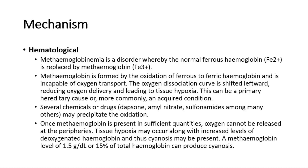For hematological causes, methemoglobinemia is a disorder whereby the normal ferrous hemoglobin is replaced by methemoglobin. Methemoglobin is formed by the oxidation of ferrous to ferric hemoglobin and is incapable of oxygen transport. The oxygen dissociation curve is shifted leftward, reducing oxygen delivery and leading to tissue hypoxia. This can be a primary hereditary cause, or more commonly, an acquired condition. Several chemicals or drugs may precipitate the oxidation. Once methemoglobin is present in sufficient quantities, oxygen cannot be released at the peripheries. Tissue hypoxia may occur along with increased levels of deoxygenated hemoglobin, and thus cyanosis may be present. A methemoglobin level of 1.5 grams per deciliter, or 15% of total hemoglobin, can produce cyanosis.